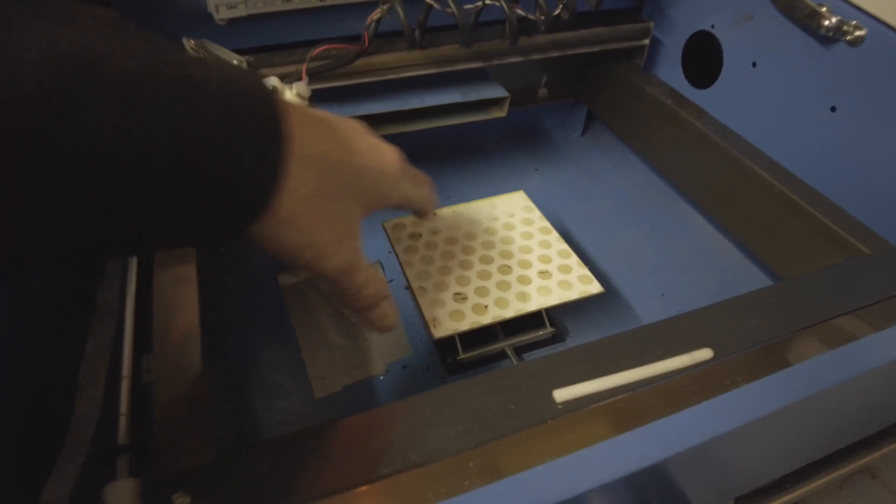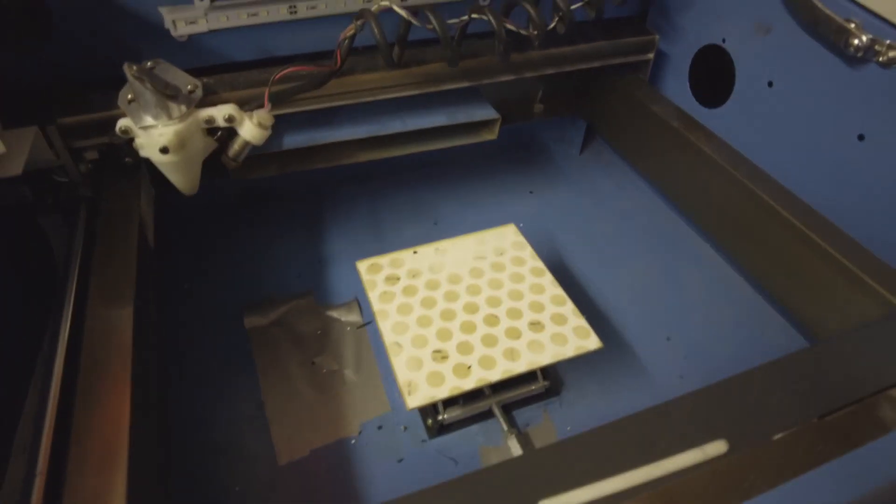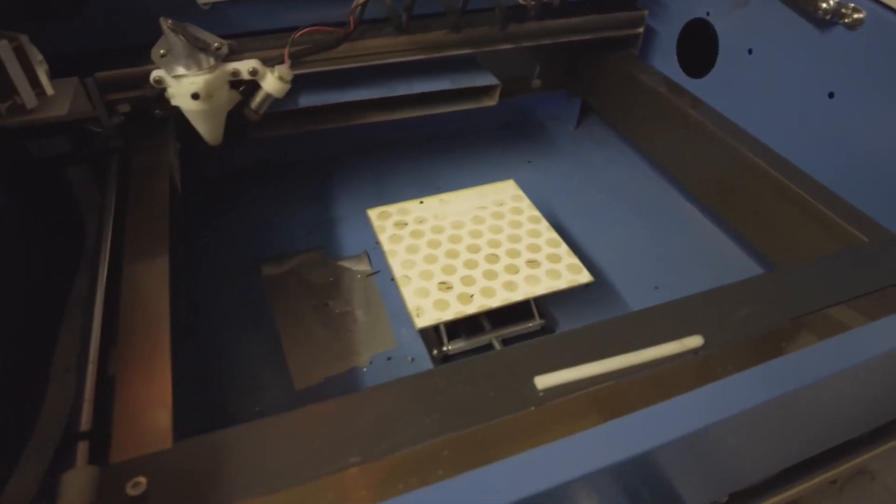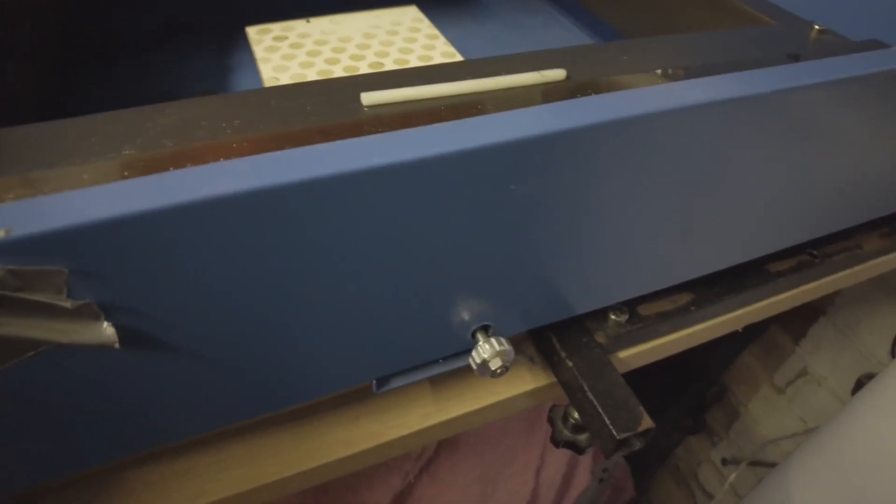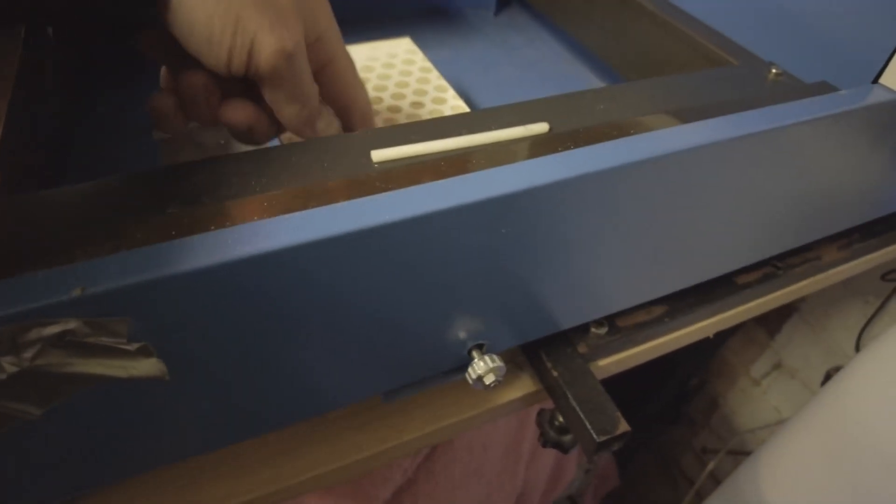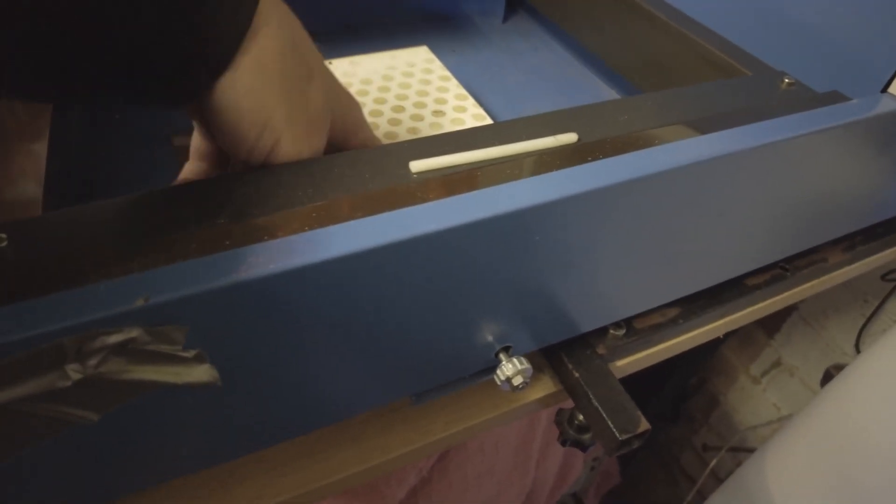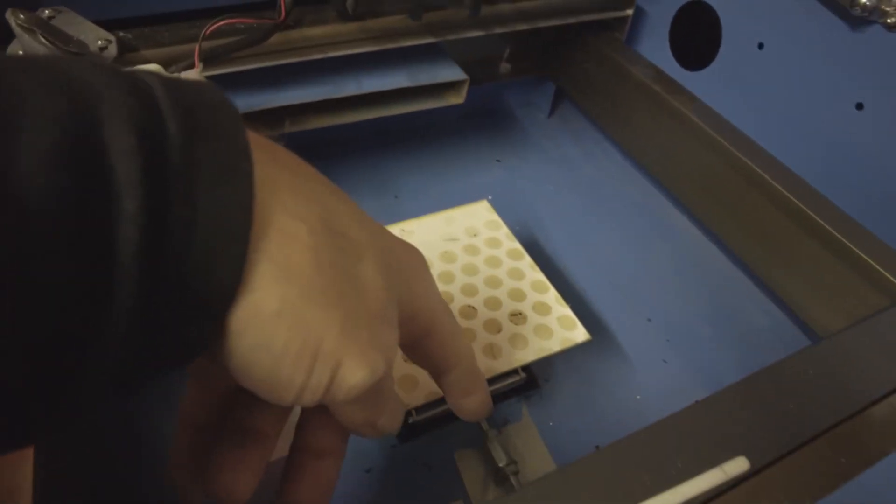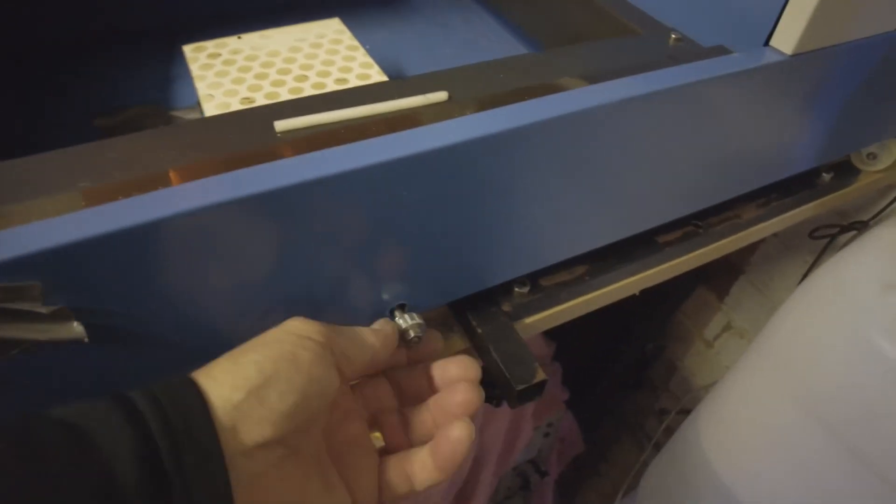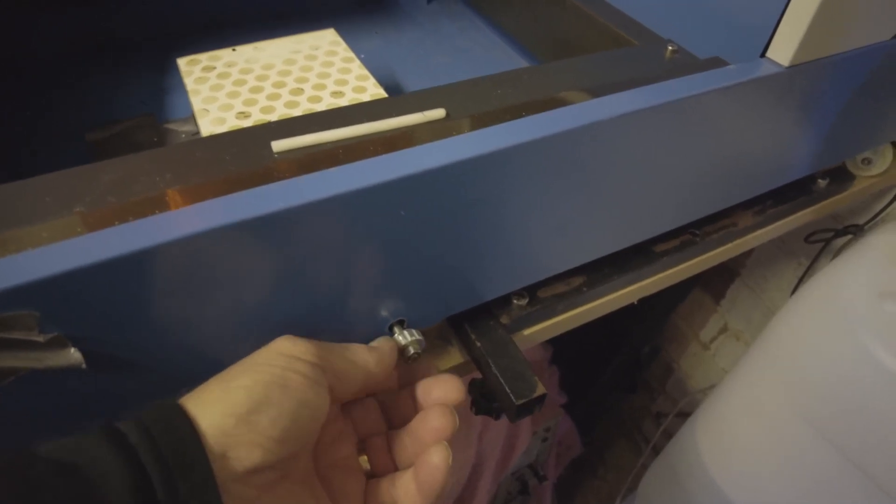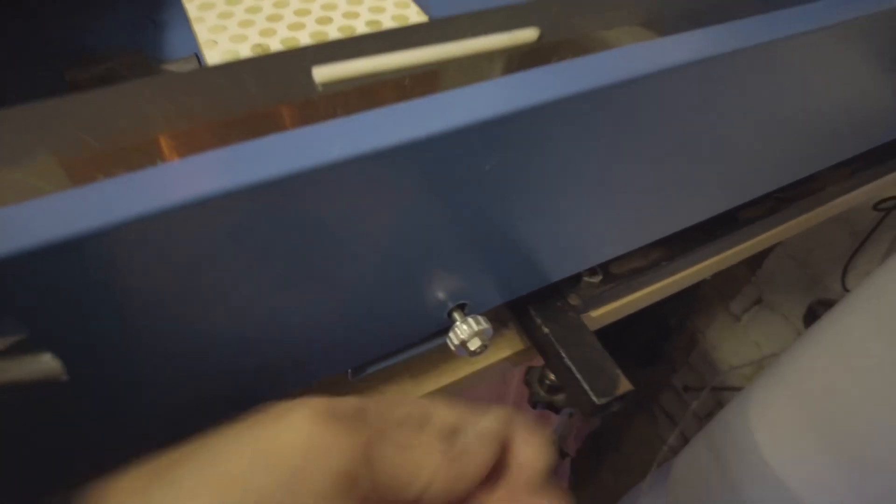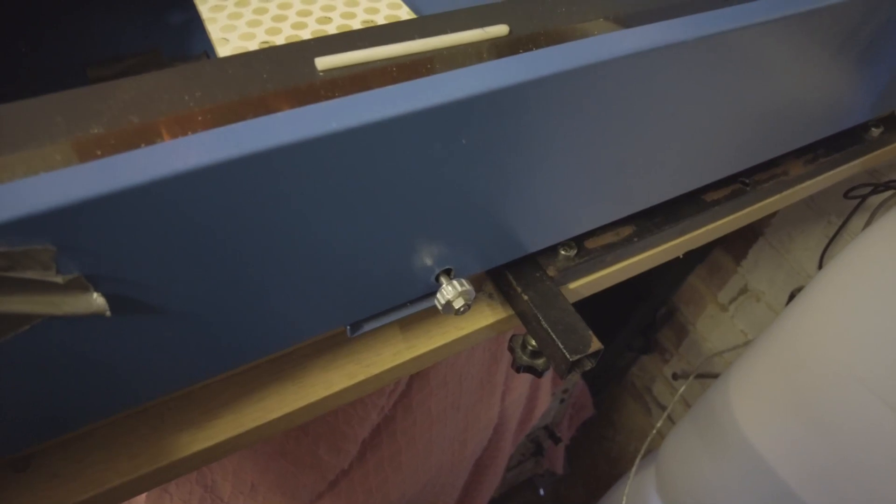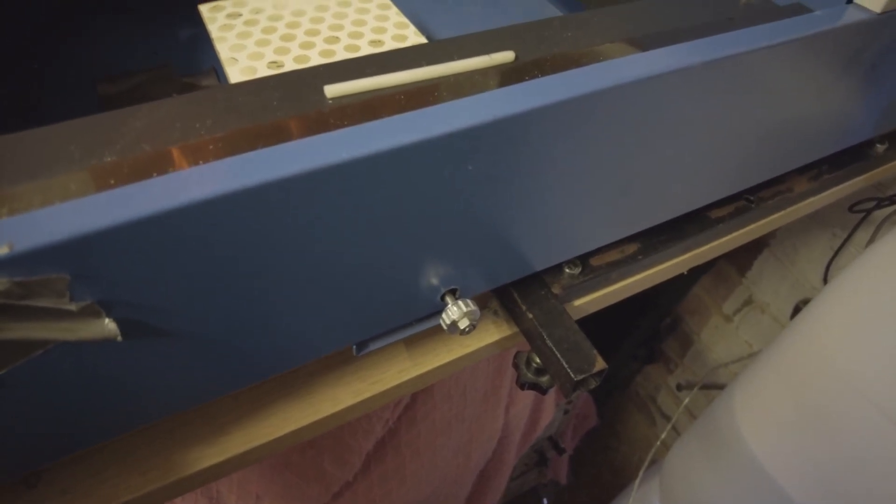And then obviously the honeycomb bed. And then it's a simple case, a bit of threaded bar, 6mm threaded bar, connecting to the other rod which is down there, all through the front, put the knob on. And it's locked on. Put the knob on and I can adjust that up and down.